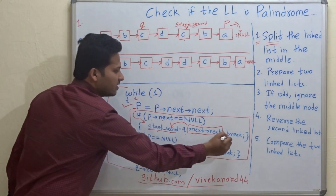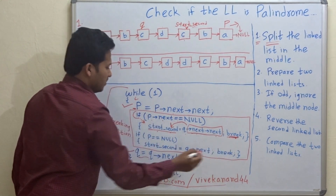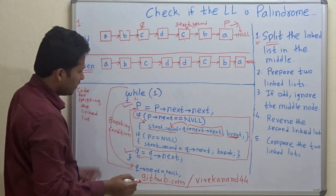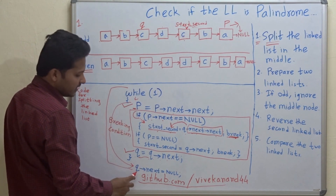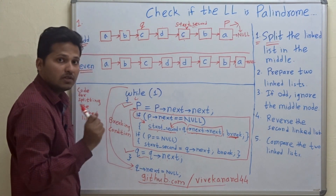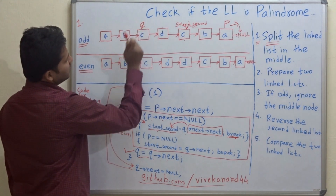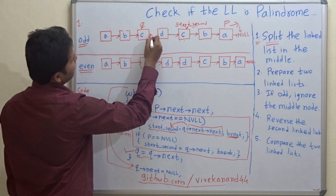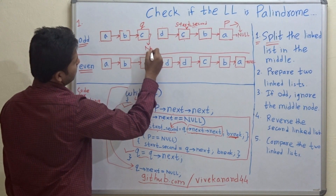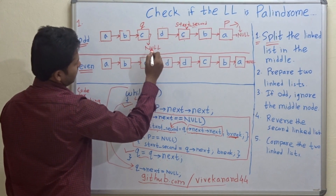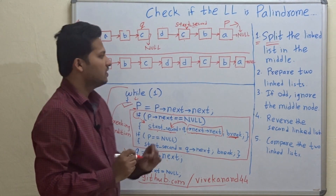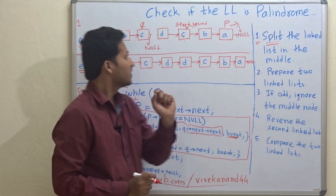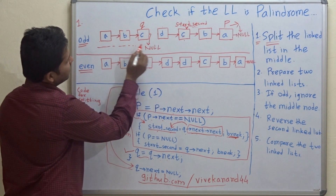Then the break condition triggers and we come out of the while loop. After coming out of the loop, there is a line Q->next = null, so we make the next pointer of Q null. This completes the second step: prepare two linked lists. We have now prepared these two linked lists.